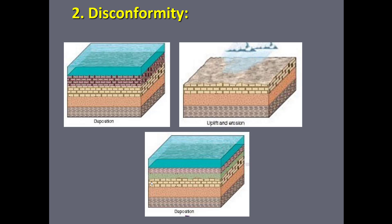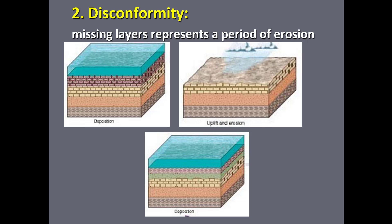When sea level rises again, new sedimentary layers are deposited, and between the yellow layer and the green layer is the erosional surface — the disconformity. We've lost layers of rock and part of the geologic story. You can recognize a disconformity by looking for chunks of the eroded rock included at the base of the overlying layer, an irregular surface between layers, or a mineral deposit marking its location. They're tricky to identify.